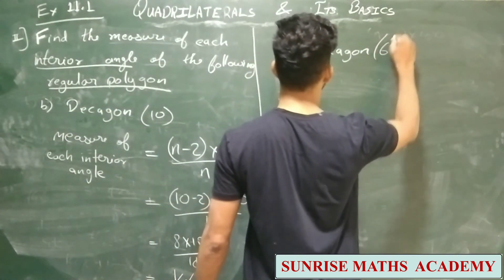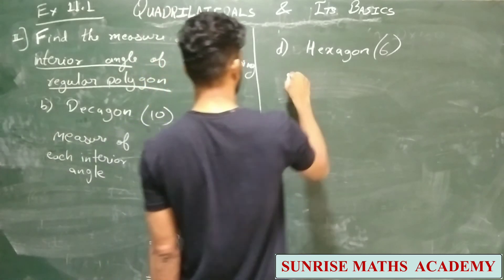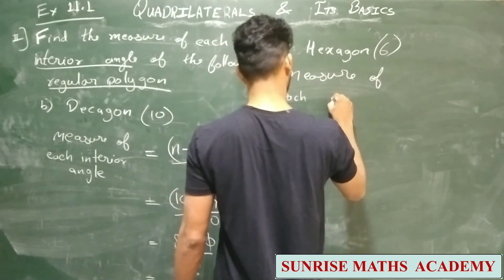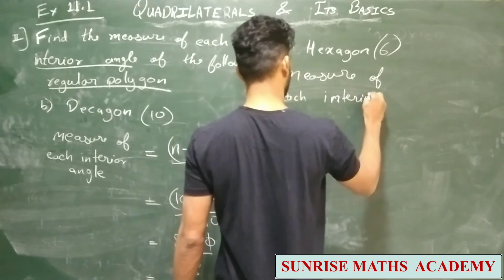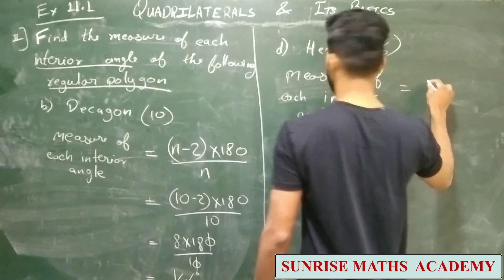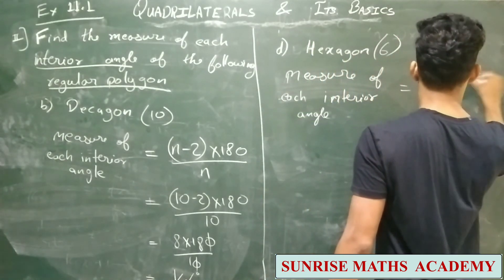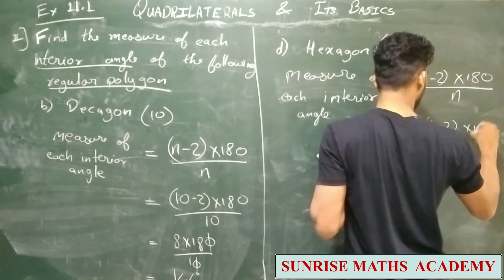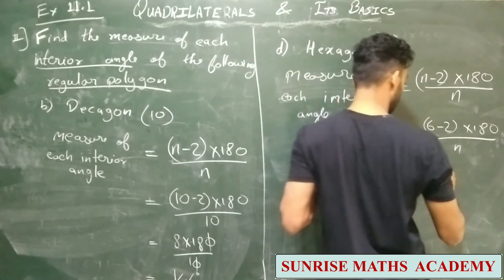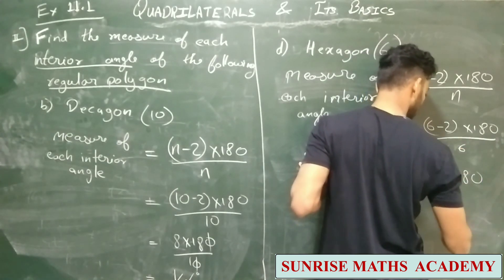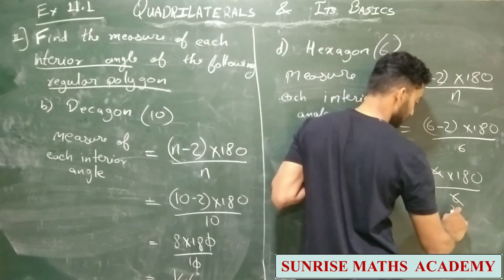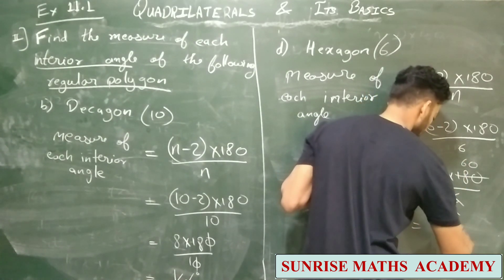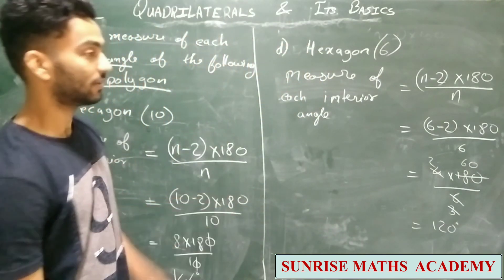Next: a hexagon, which is a 6-sided polygon. Using the same method, measure of each angle = (n − 2) × 180 ÷ n. With n = 6: (6 − 2) × 180 ÷ 6 = 4 × 180 ÷ 6 = 120 degrees. Each interior angle of a regular hexagon is 120 degrees.